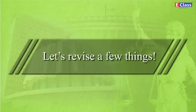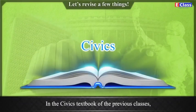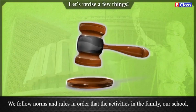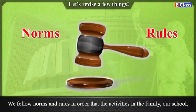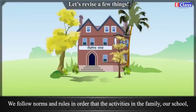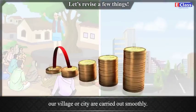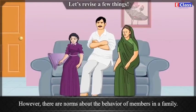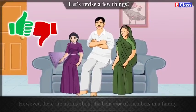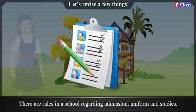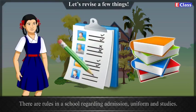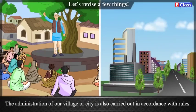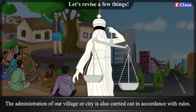Let's revise a few things. In the civics textbooks of the previous classes, we saw many reasons why rules are necessary in our lives. We follow norms and rules so that activities in the family, our school, our village or city are carried out smoothly. There are norms about the behaviour of members in a family. There are rules in a school regarding admission, uniform and studies. Different competitions also have their own rules. The administration of our village or city is also carried out in accordance with rules.